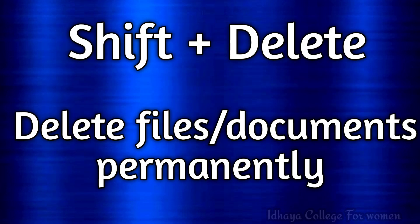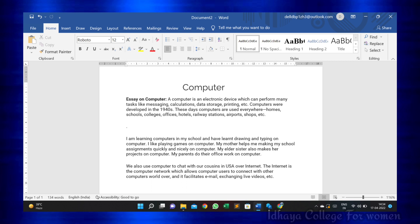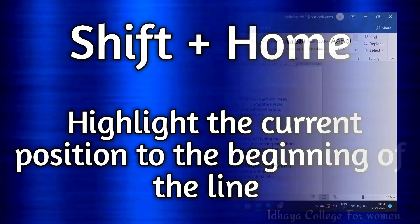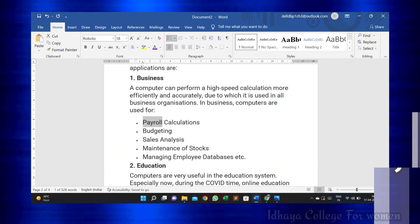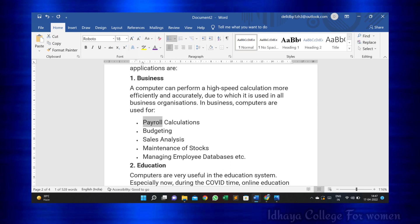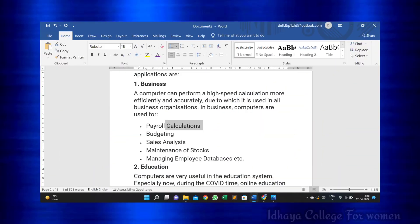Shift plus Delete: this shortcut key is used to delete files or documents permanently. Shift plus Home: this shortcut key is used to highlight from the current position to the beginning of the line. Shift plus End: this shortcut key is used to highlight from the current position to the end of the line.